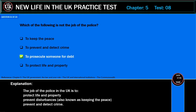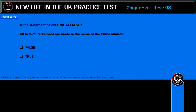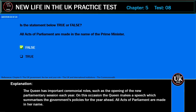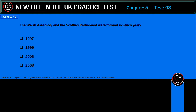Is the statement below true or false? All Acts of Parliament are made in the name of the Prime Minister. Correct answer: False. Explanation: The Queen has important ceremonial roles, such as the opening of the new parliamentary session each year. On this occasion the Queen makes a speech which summarizes the government's policies for the year ahead. All Acts of Parliament are made in her name.